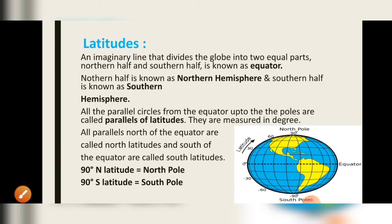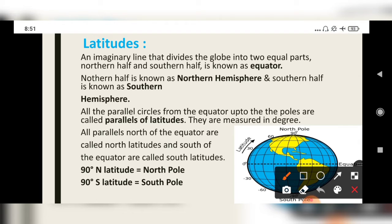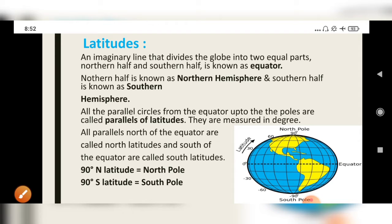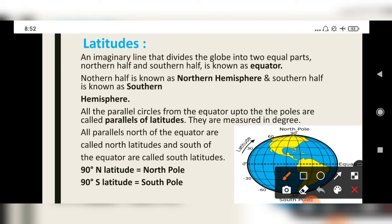Now let's see what latitudes are. An imaginary line that divides the globe into two equal parts — the northern half and the southern half — is known as the equator. As you can see in this picture, this line is your equator. It divides the globe into two halves: northern half and southern half. The northern half is known as the northern hemisphere and the southern half is known as the southern hemisphere.